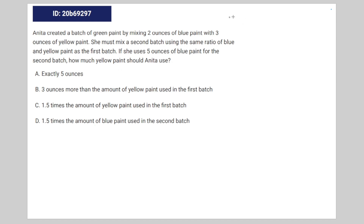We're given the following relationship: she'll use 3 ounces of yellow paint but only 2 for blue. Therefore, multiplying both sides by 3, you get y is equal to 3 halves times b.